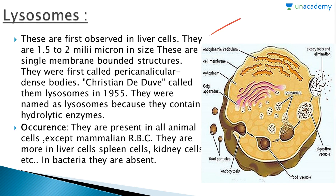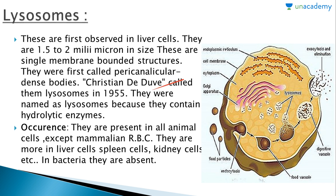Lysosomes were firstly observed in liver cells. They are 1.5 to 2 millimicrons in size. These are single membrane-bound structures. They were firstly called as pericanalicular dense bodies. Christian de Duve named them lysosomes in 1955. The name lysosomes was given because they contain hydrolytic enzymes.